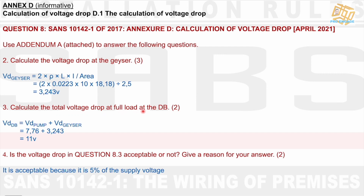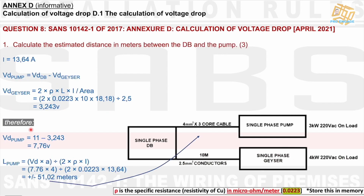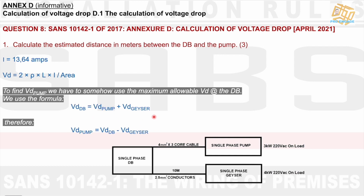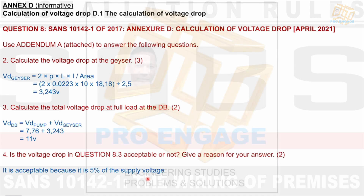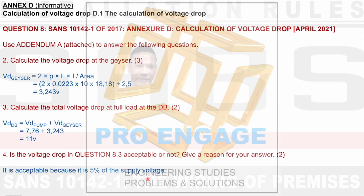For question 8.3, calculate the total voltage drop at full load at the DB. Using the formula VD_DB = VD_pump + VD_geyser, we inject our values and find VD_DB = 11 V, which is exactly 5% of 220 V. For question 8.4, is this voltage drop acceptable? Yes, it is acceptable because it equals exactly 5% of the supply voltage, which is the maximum allowable limit stated on the welcome page.